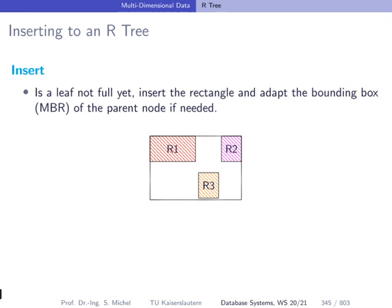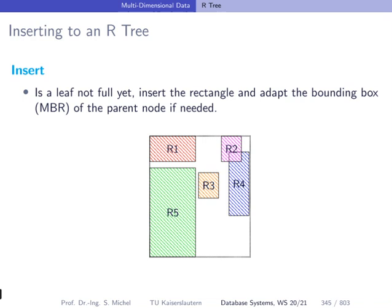So how can we insert data into the R-Tree? Let's have a look at a sample leaf node. This leaf node stores three objects R1, R2, and R3. Let's assume that this leaf is not full yet and a new rectangle is coming. We want to insert this new rectangle inside this leaf node. The new rectangle R4 is inserted, and in order to have this minimum bounding rectangle still capturing all elements, it has to be enlarged. If we then insert another rectangle R5, the minimum bounding rectangle is now capturing all of the rectangles.